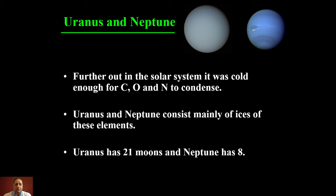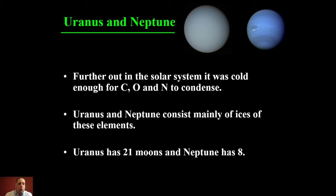Even further out, beyond Saturn, you have Uranus and Neptune. You're so far from the Sun that it's cold enough to get condensations of carbon, nitrogen, and oxygen — elements we don't normally think of as anything other than gas — forming ices. These planets are made up of gas but also a lot of ice: not water ice, but things like methane turned into ice and materials like that.